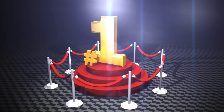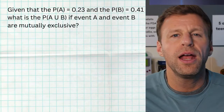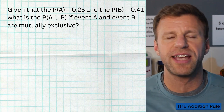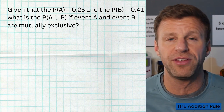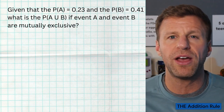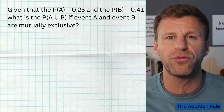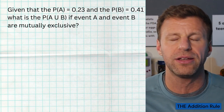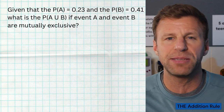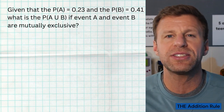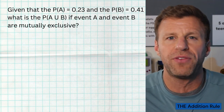Let's dive into scenario number one. In this scenario, you're typically given some generic probabilities. In this case, we're told that the probability of event A is 0.23, and the probability of event B is 0.41, and we're asked to find the probability of A or B. Make sure you understand that union symbol — that U stands for union, which is OR.